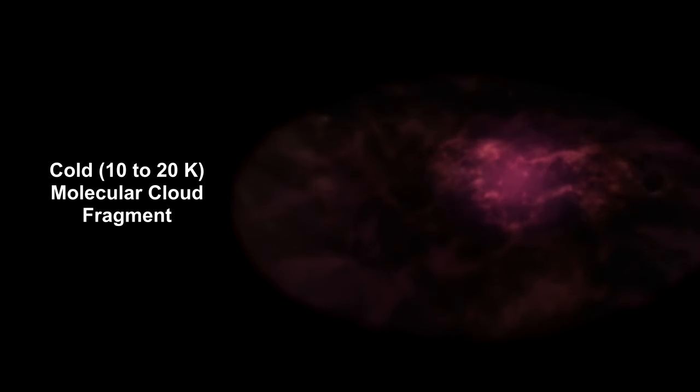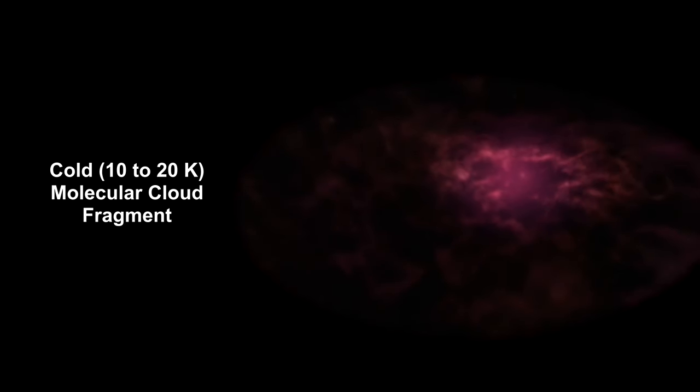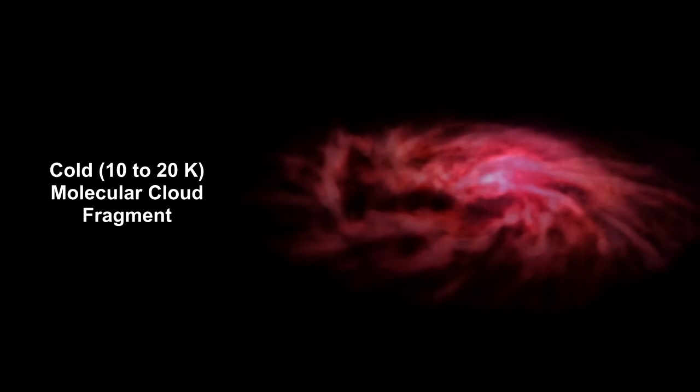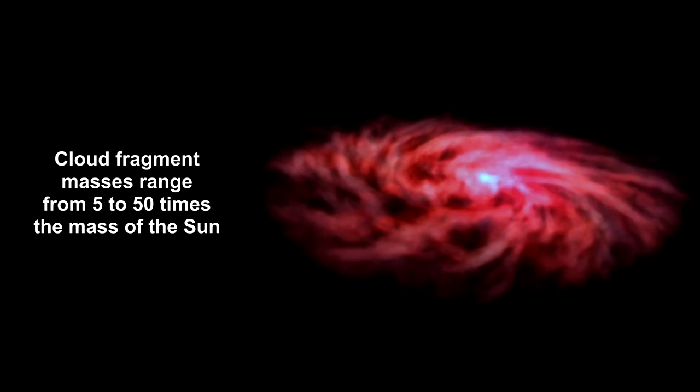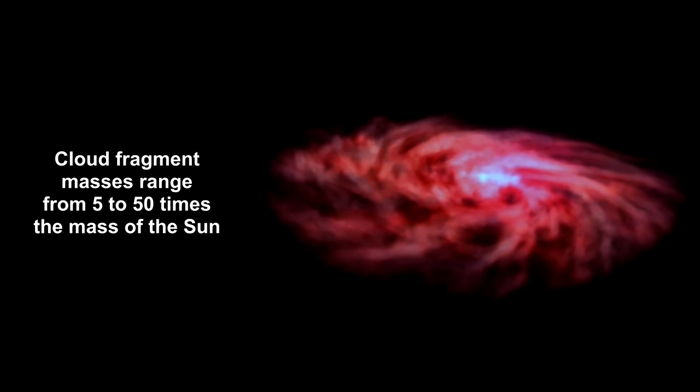The process begins when the denser parts of the cloud collapse under their own gravity. Angular momentum turns the cloud into a rotating disk with the center forming into a protostar. The whole process takes around 10 million years.